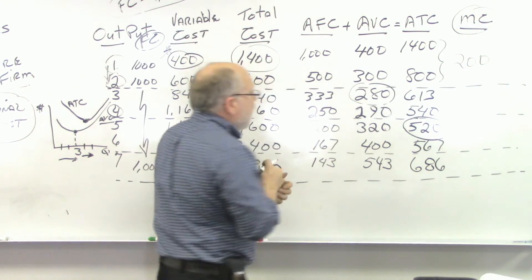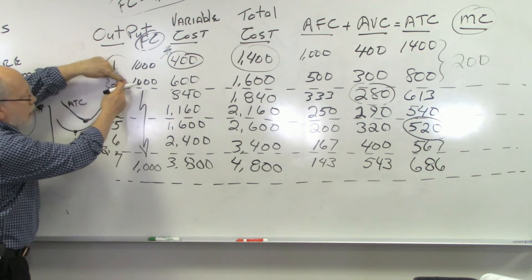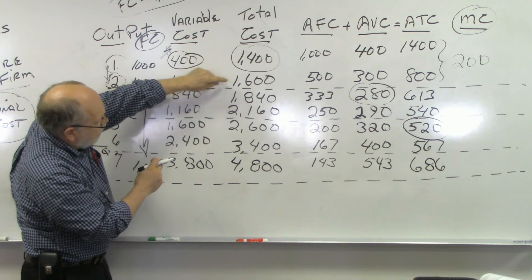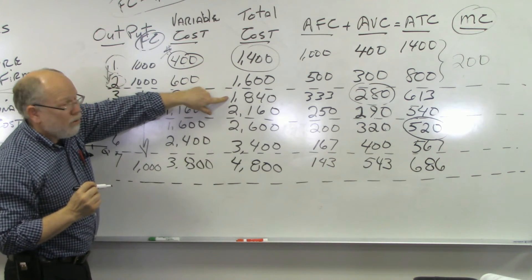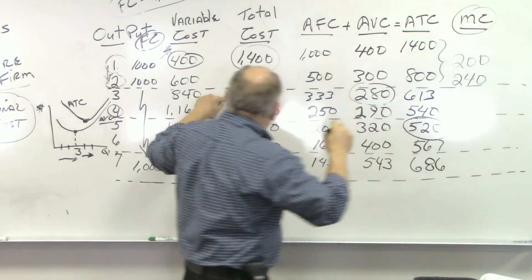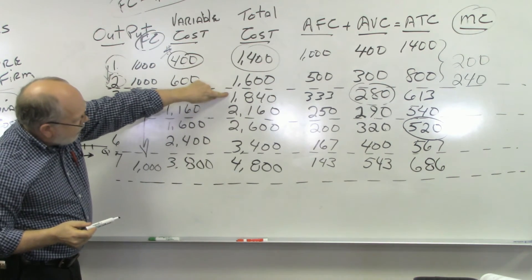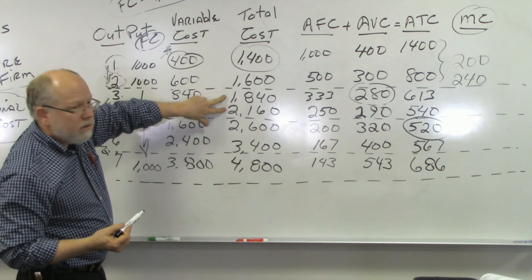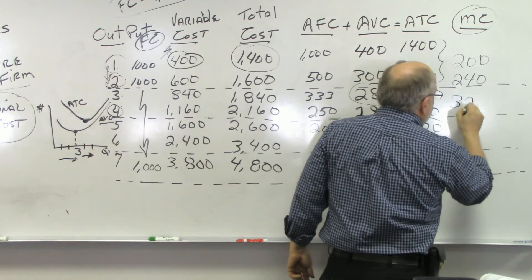With total cost of $1,600 at output 2, the marginal cost of producing one more is $1,840 minus $1,600 equals $240. So we put $240 here for the marginal cost between outputs 2 and 3. What's our marginal cost going from output 3 to output 4? That's $2,160 minus $1,840 equals $320.